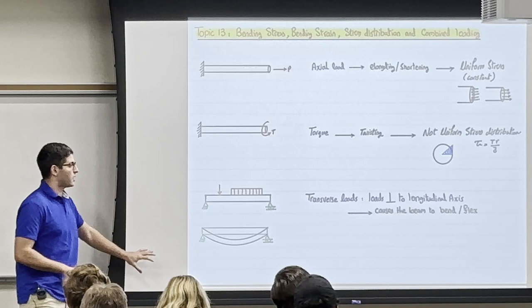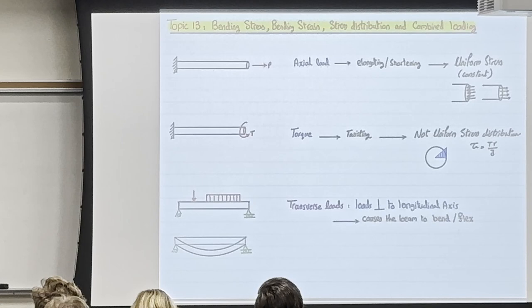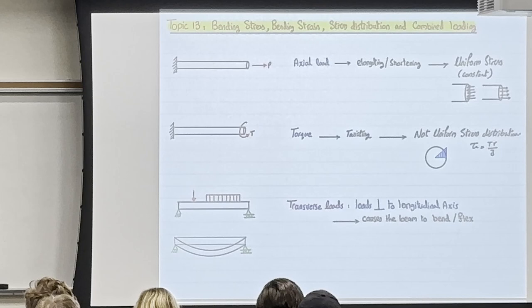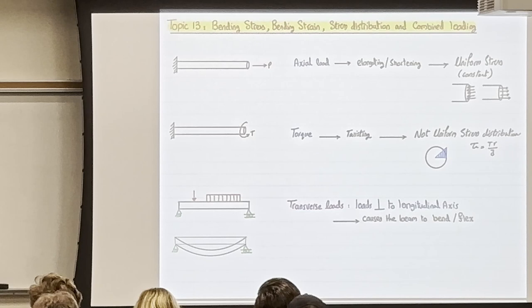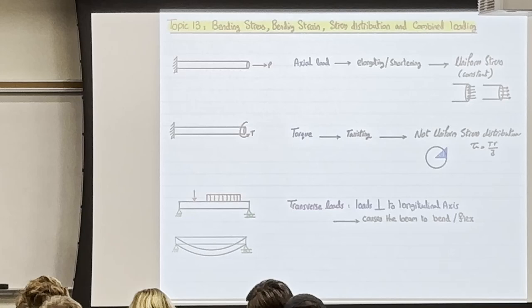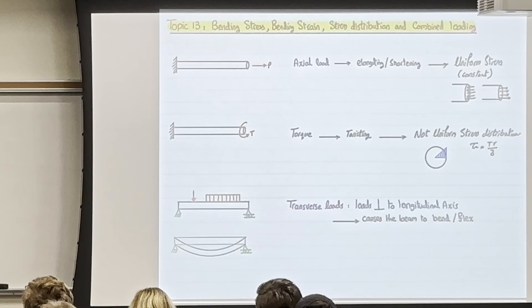Before going into today's class, I want to review what we did before so you can connect everything together. We started the semester with a beam and applied axial load, and with that axial load the beam elongated or shortened — that was the strain. For the axial load, the stress was uniform, basically force over area, so the whole cross section felt the same stress.